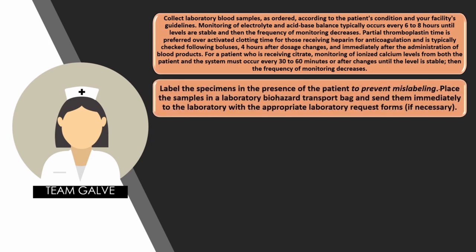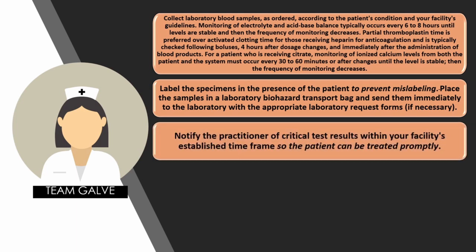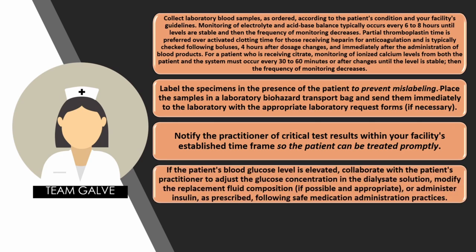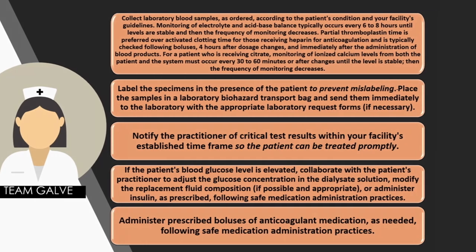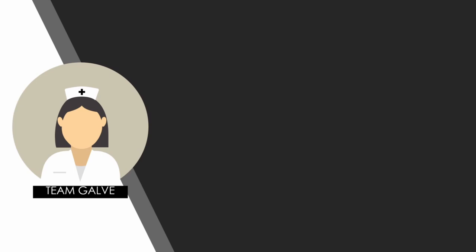Monitoring of electrolyte and acid-base balance typically occurs every 6 hours until levels are stable, then monitoring frequency decreases. Partial thromboplastin time is preferred over activated clotting time for patients receiving heparin for anticoagulation, and is typically checked following boluses, 4 hours after dosage changes, and immediately after administration of blood products. For a patient receiving citrate, monitoring of ionized calcium levels from both the patient and the system must occur every 30 to 60 minutes after changes until the level is stable, then monitoring frequency decreases. In our facility, 6 hours post-initiation of CRRT, expect lab orders — Q6. Label the specimens in the presence of the patient to prevent mislabeling.